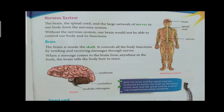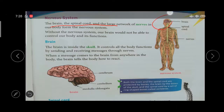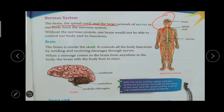What do you mean by nervous system? Our brain, spinal cord, and large network of nerves — our body contains a large number of nerves. These together form the nervous system. The parts are brain, spinal cord, and nerves. Without the nervous system, the brain would not be able to control our body.